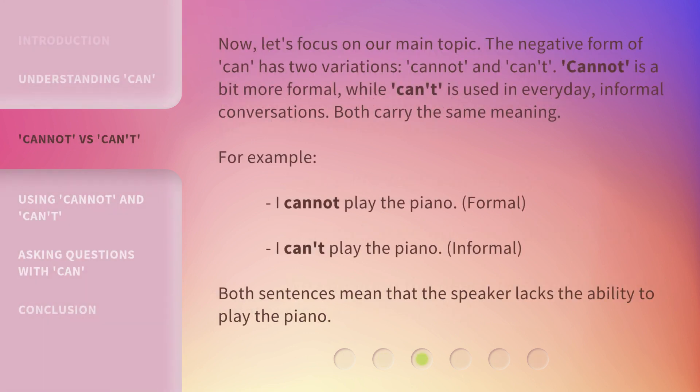Now, let's focus on our main topic. The negative form of can has two variations: cannot and can't. Cannot is a bit more formal, while can't is used in everyday informal conversations. Both carry the same meaning. For example: 'I cannot play the piano' — formal. 'I can't play the piano' — informal. Both sentences mean that the speaker lacks the ability to play the piano.